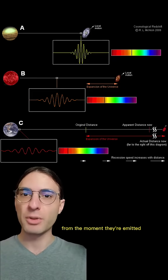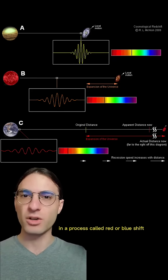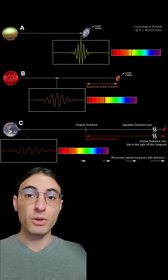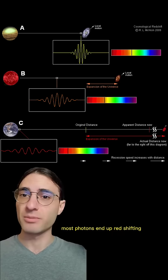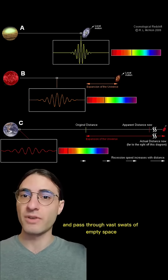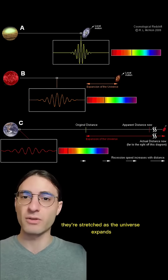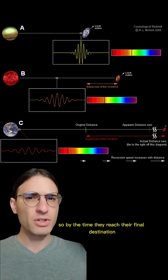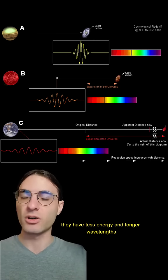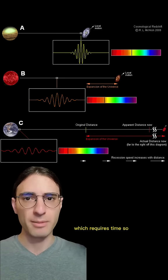But photons can and do change from the moment they're emitted to the moment they're absorbed in a process called red or blue shift. In our universe, most photons end up red shifting. As they're emitted from galaxies and pass through vast swaths of empty space, they're stretched as the universe expands. So by the time they reach their final destination, they have less energy and longer wavelengths. And that means that they changed, which requires time.